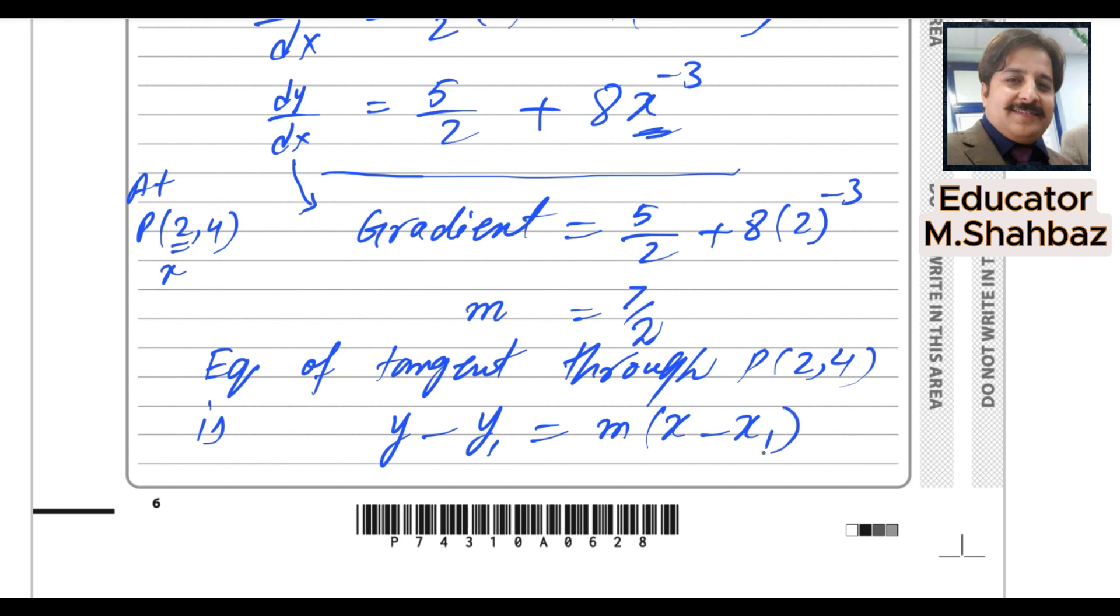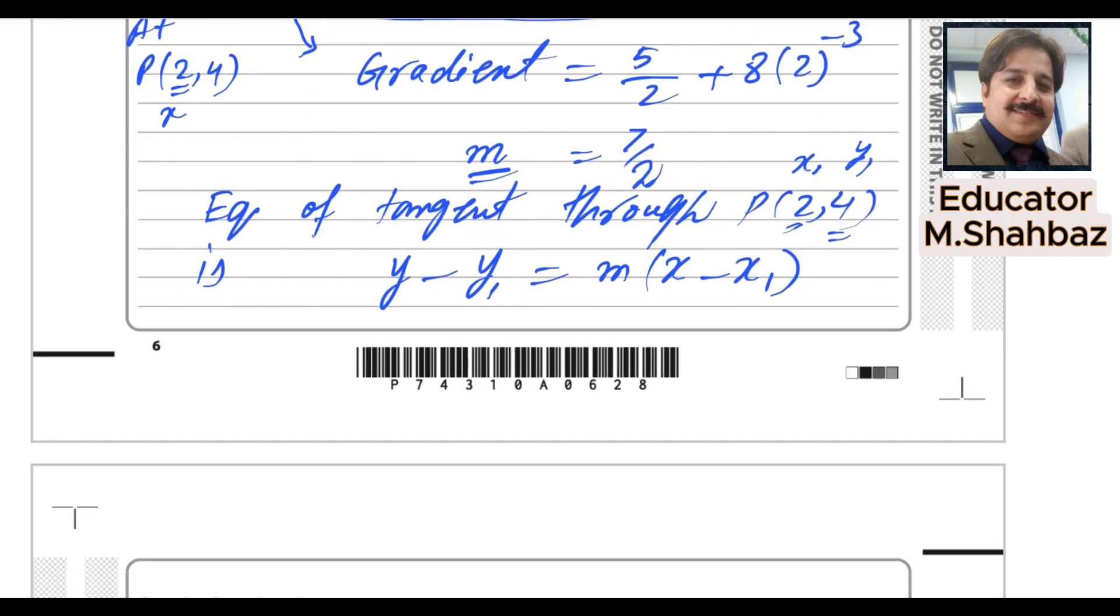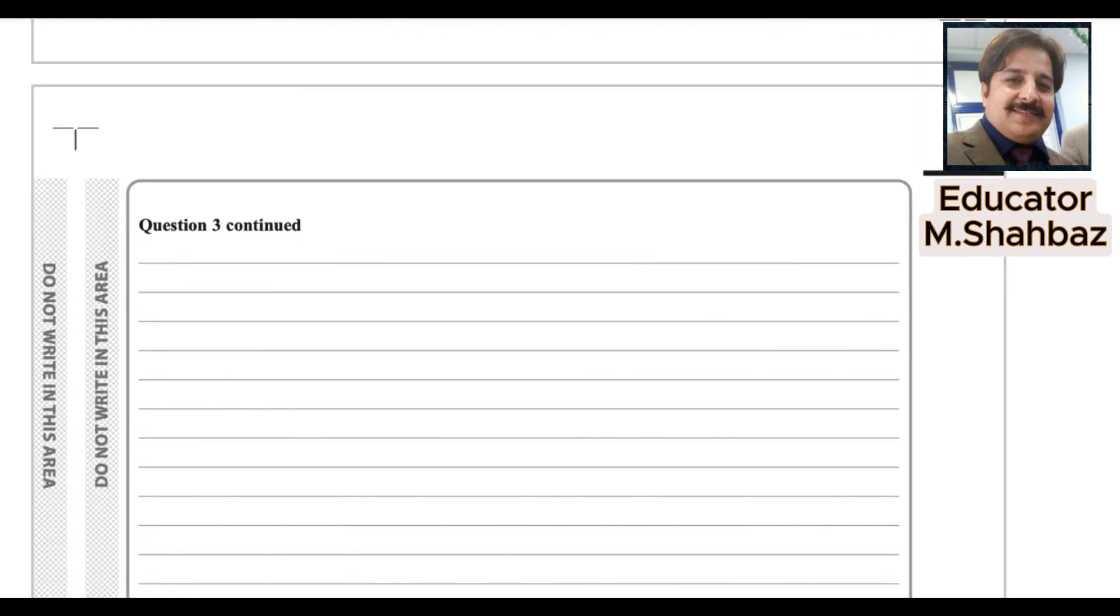Now, we already got the value of m. Value of x1 is given. This is x1. And this value is y1. So you substitute these values in the equation and finally we will simplify this. So it will be y minus y1 and y1 is 4. And 7 over 2 and x1 is 2.